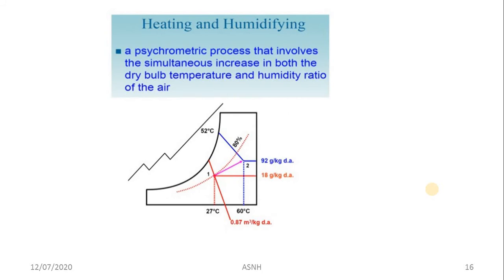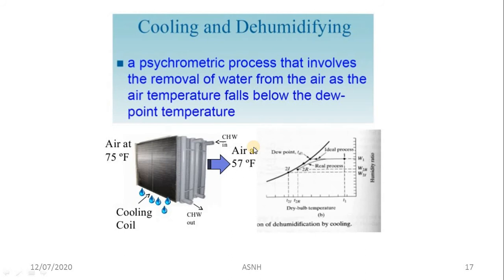Humidification means adding moisture to air, while dehumidification means removing moisture. Heating and humidification is a psychrometric process involving a simultaneous increase in both dry bulb temperature and humidity ratio. On the chart, the dry bulb temperature increases along the x-axis while humidity ratio also increases along the y-axis.